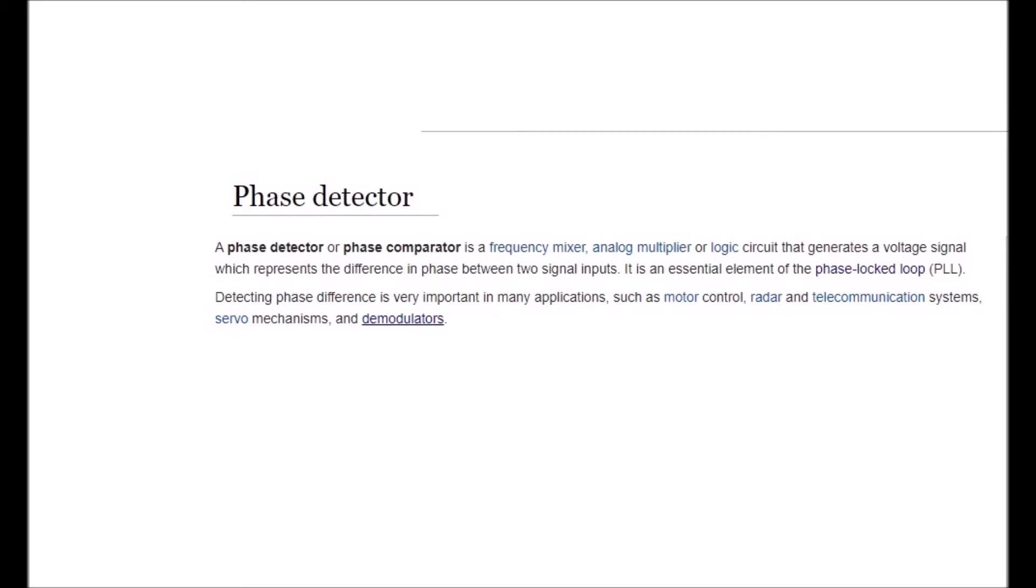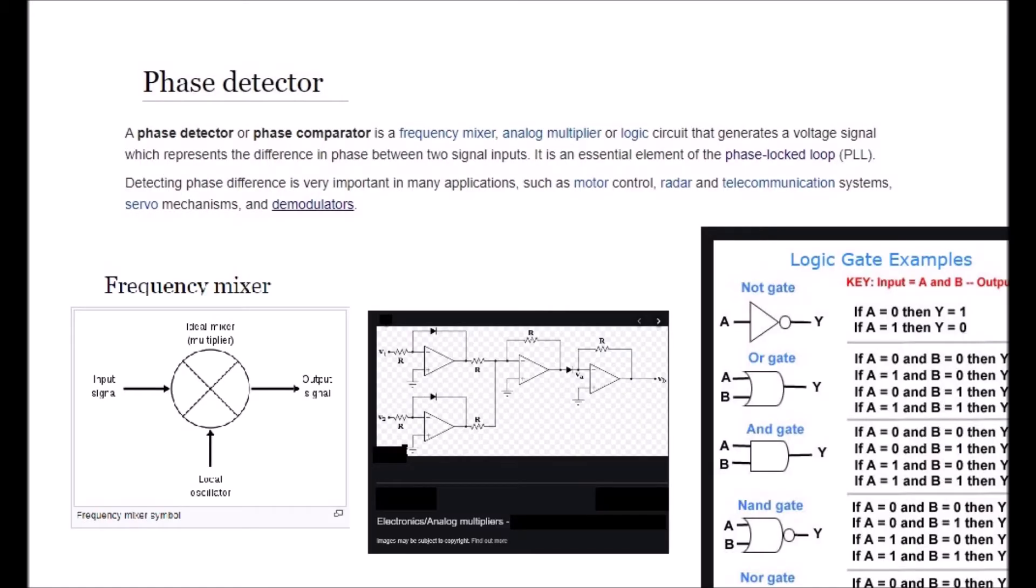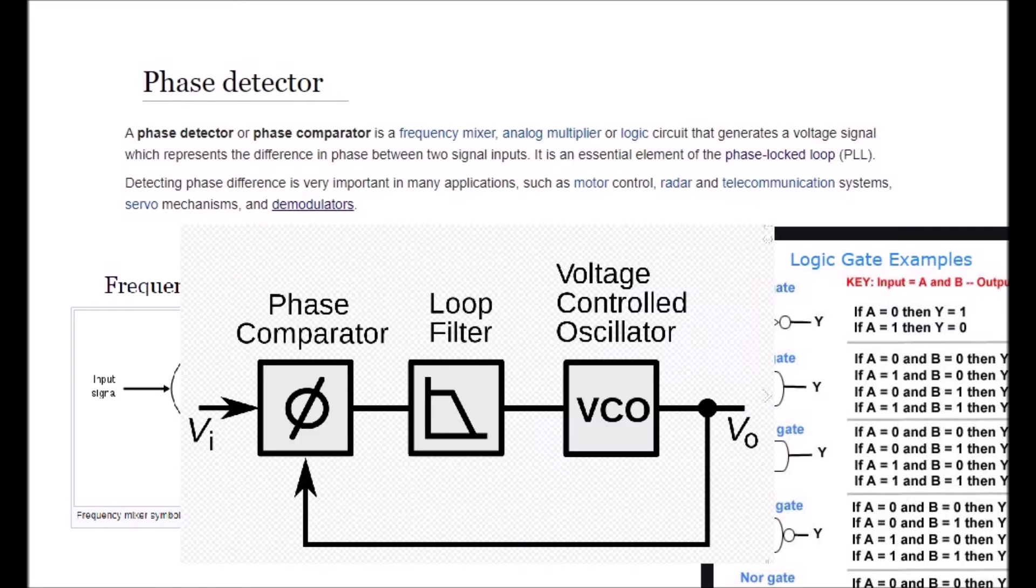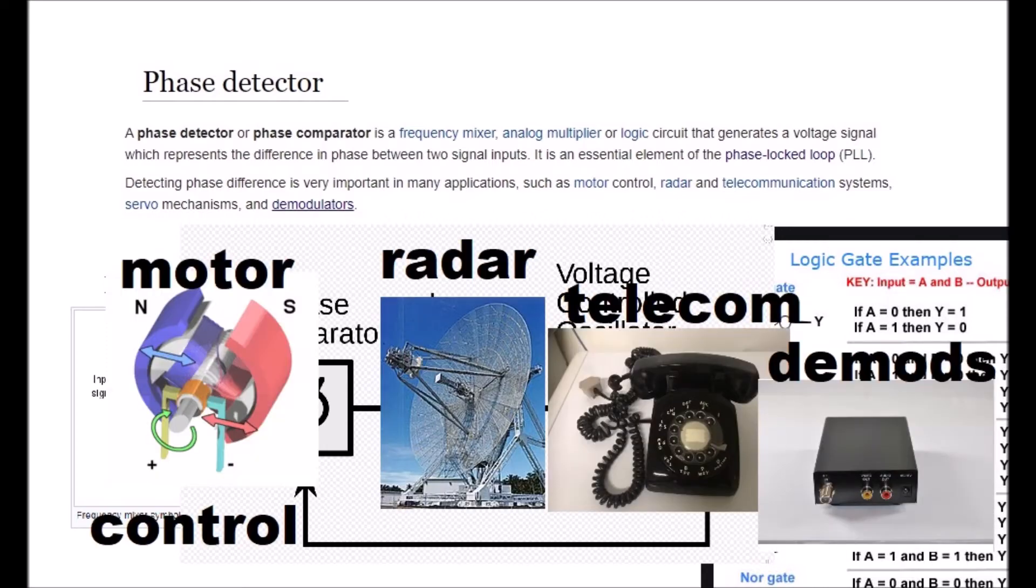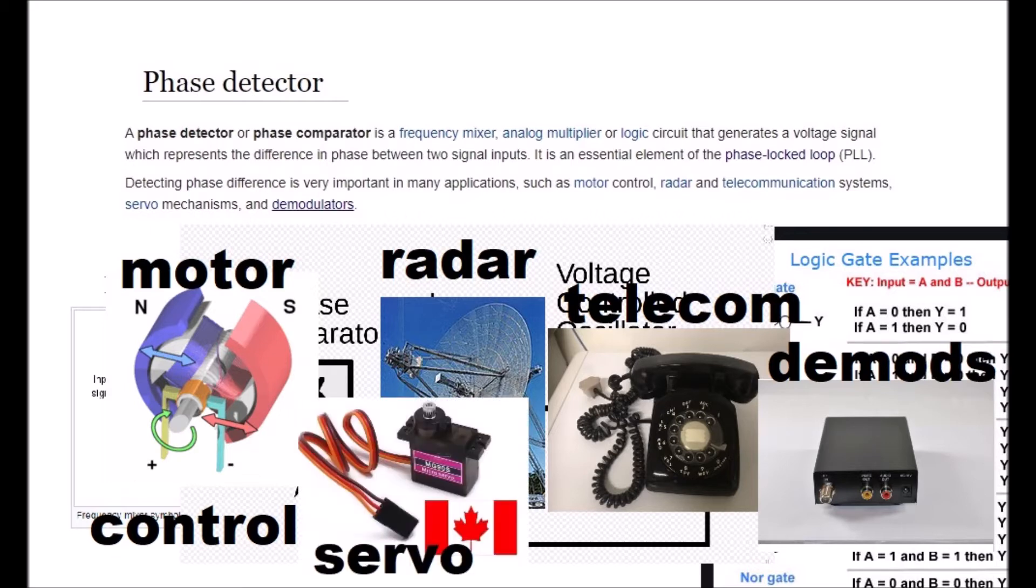Phase detector. A phase detector, or phase comparator, is a frequency mixer, analog multiplier, or logic circuit that generates a voltage signal which represents the difference in phase between two signal inputs. It is an essential element of the phase locked loop PLL. Detecting phase difference is very important in many applications such as motor control, radar and telecommunication systems, servo mechanisms, and demodulators.